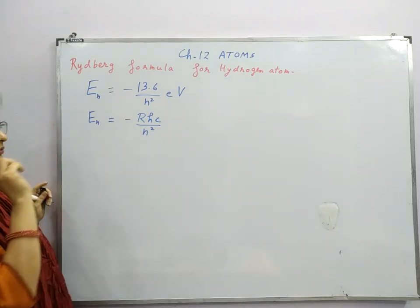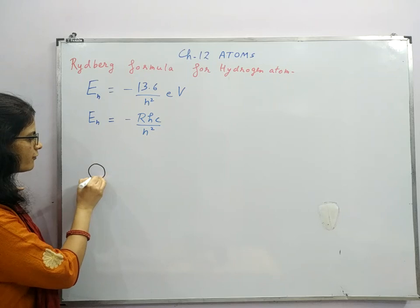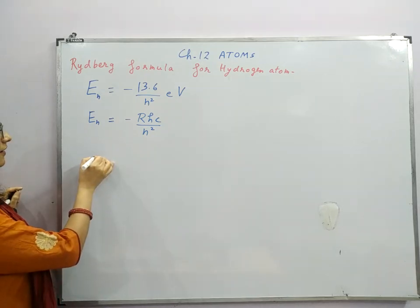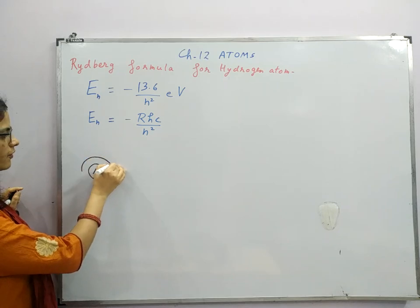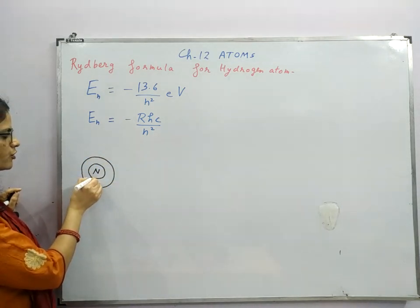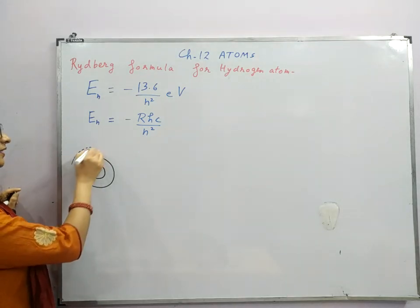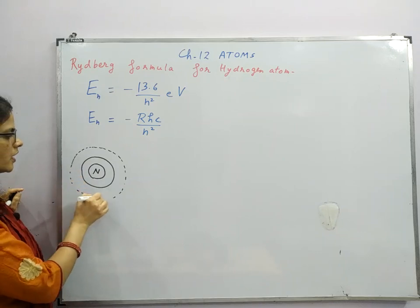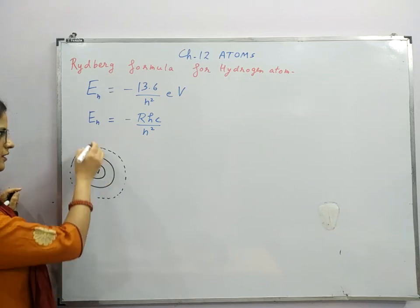Before that, we need to recall that if we have this as nucleus of hydrogen atom, we have only one shell in normal conditions, which is called the ground state. But after exciting, the electron may reach to the higher energy levels.